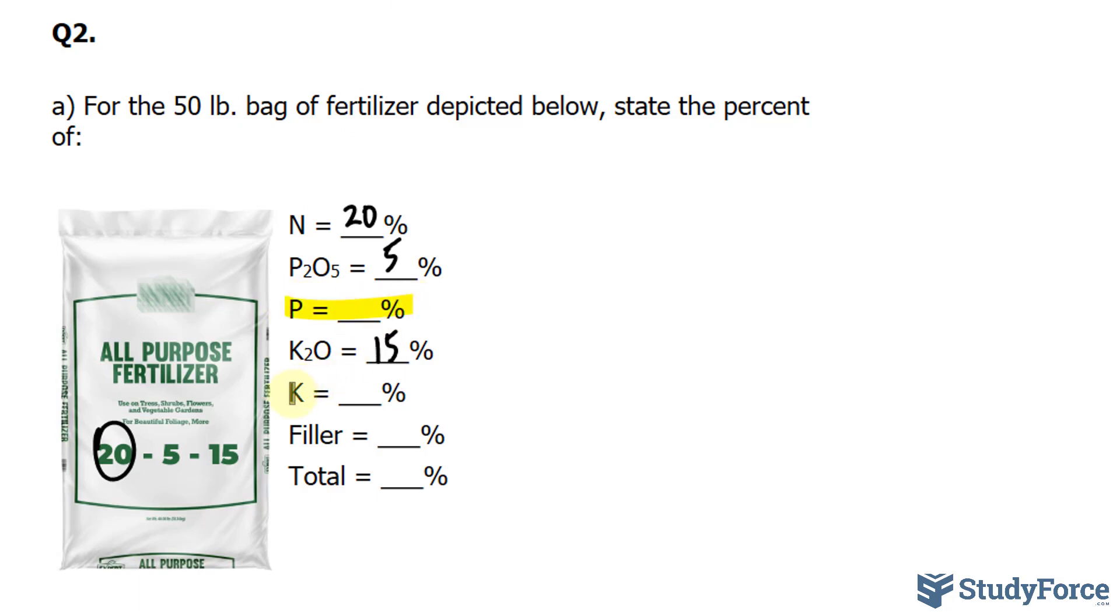We'll leave these two at the end. The amount of filler is calculated by taking 100% of the bag and subtracting that from the sum of these three numbers. So 20 plus 5 plus 15, together that makes 40. 100 minus 40 is 60% filler. So that's everything that does not include these three key nutrients. And the total should be the sum of these four numbers, which has to be 100%.